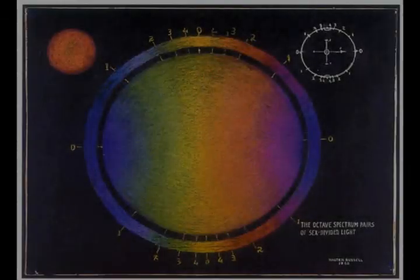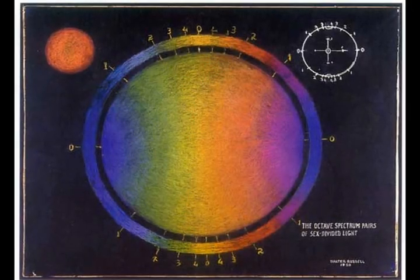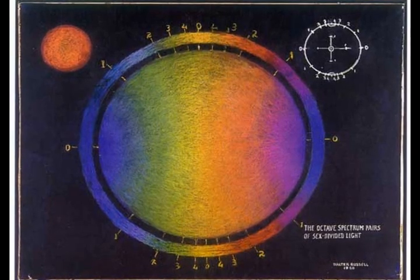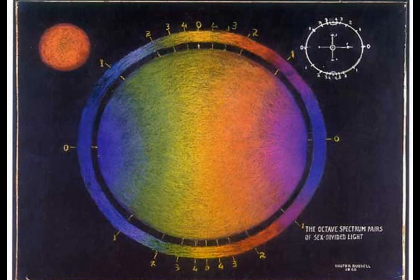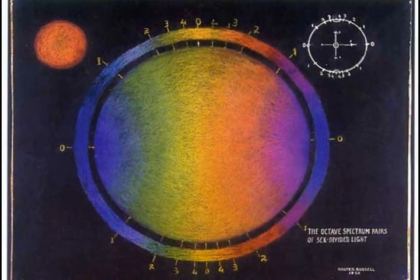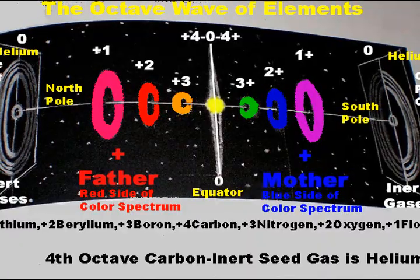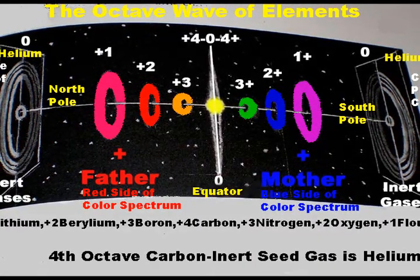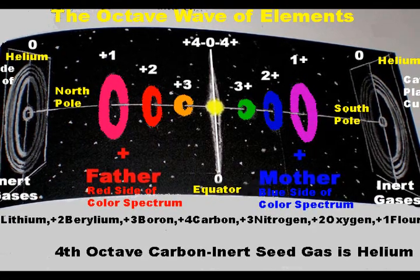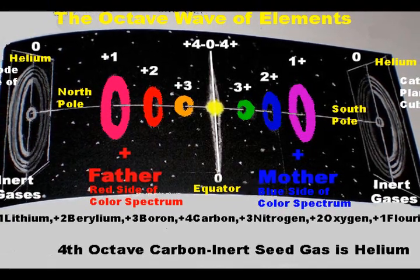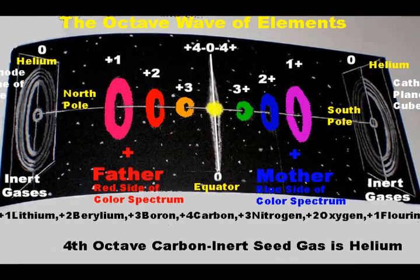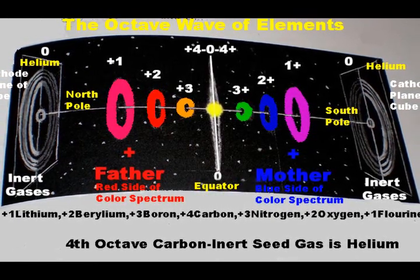Here we see the collision of spiraling electric red male and female blue lights creating a yellow spherical body at the wave crest amplitude within the cube. The colored rings represent the open hole ring-like elements which are either male red dominant or female blue dominant in their composition depending upon their locking position in each octave.